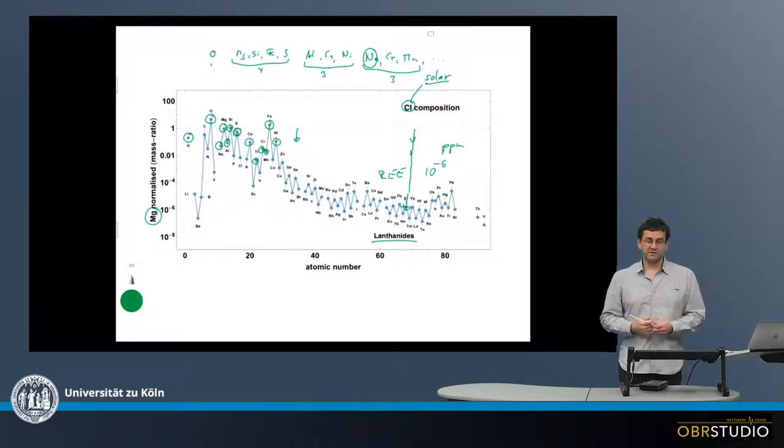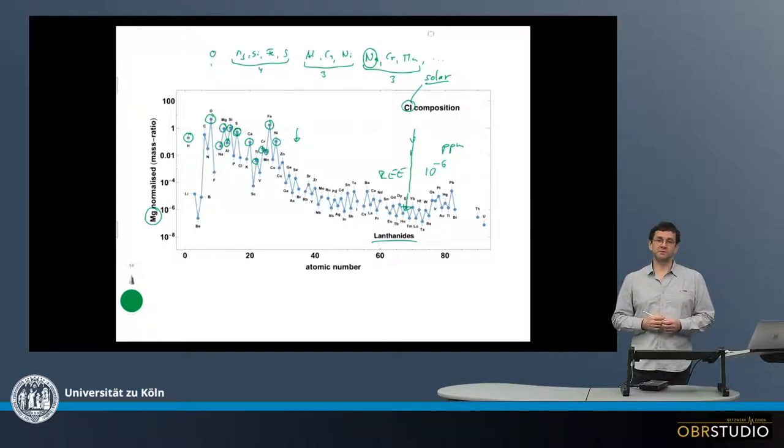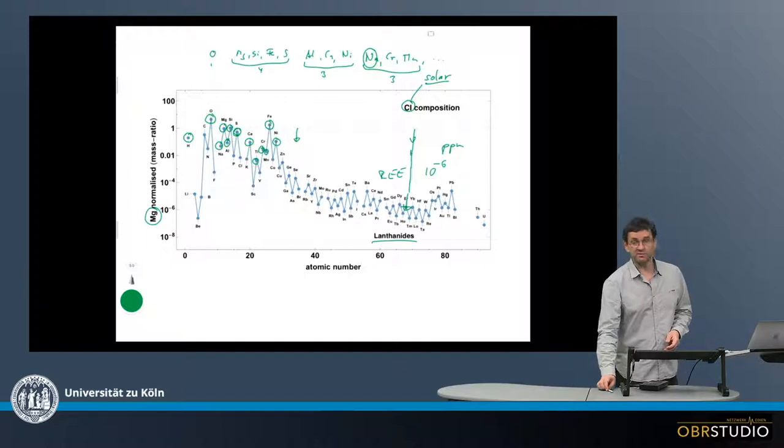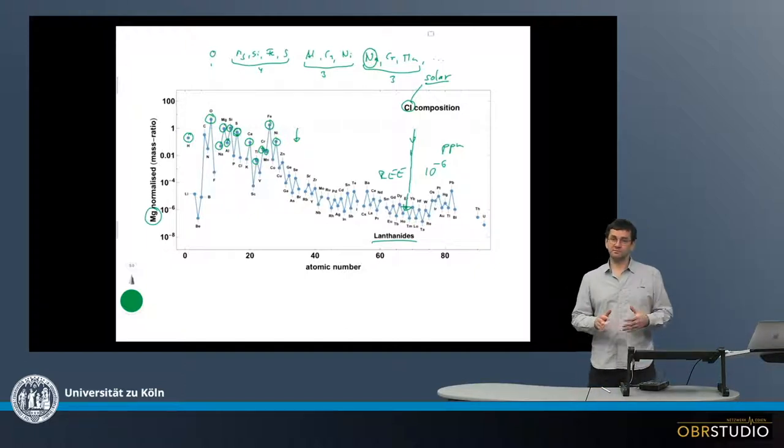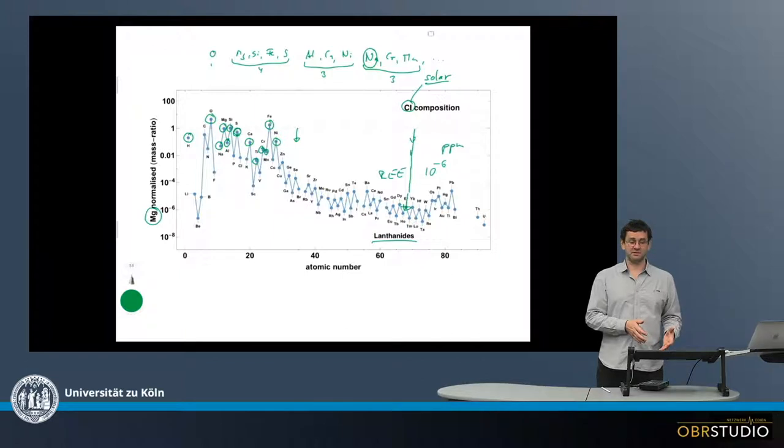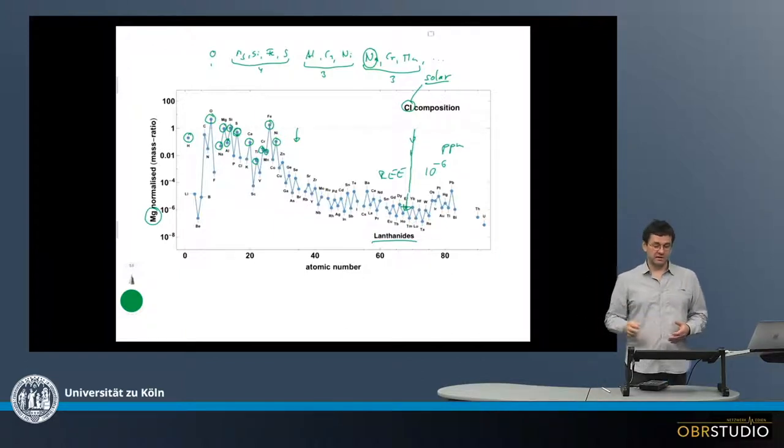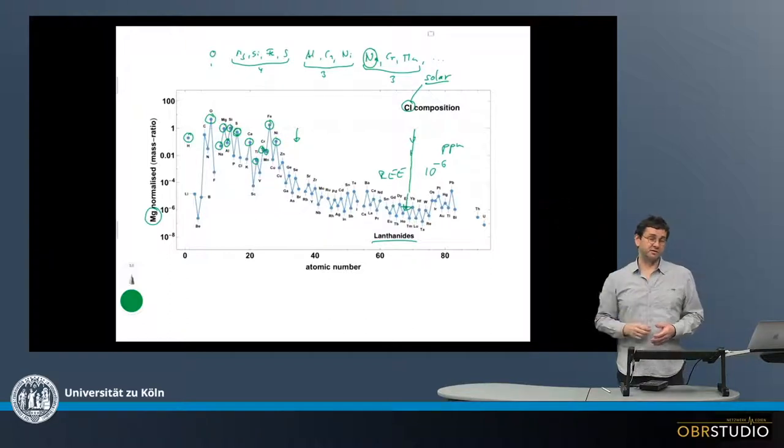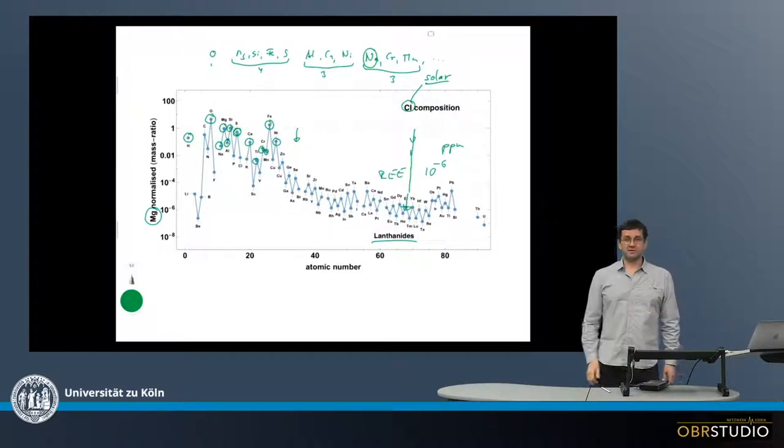So again, this is something we can immediately see from the bulk composition of CI chondrites. And these are quite a number of reasons why knowing about the CI composition is quite helpful to understand the composition of the meteorites and also the abundances of the various components within the meteorites. And the 10 or 11 major elements we should remember are those written above here and also their relative abundances.